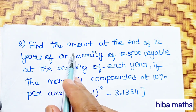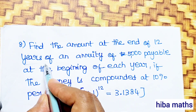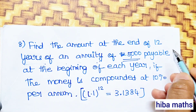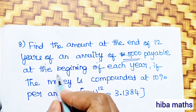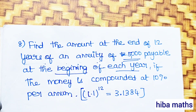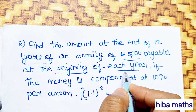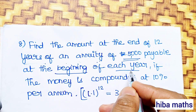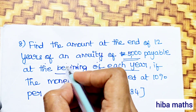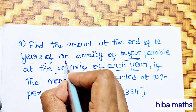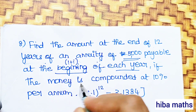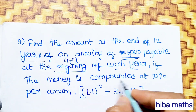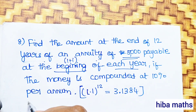Next question: find the amount at the end of 12 years of an annuity of Rs.5,000 payable at the beginning of each year. The money is compounded at 10%.